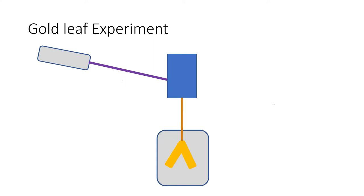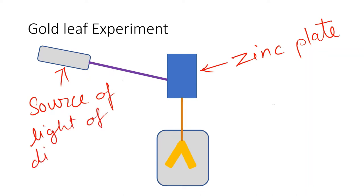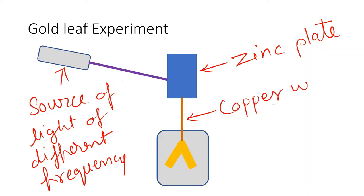This is a zinc plate. This is a source of light of different frequency. This is a good conducting wire—we can take a copper wire here—and these two are the gold leaves.